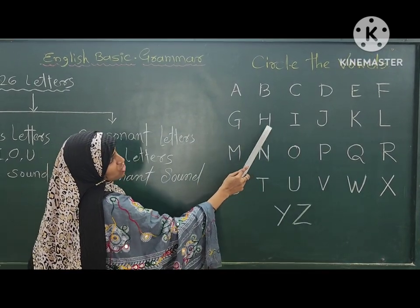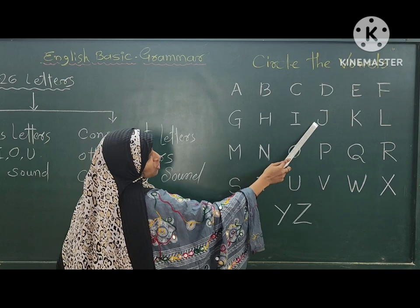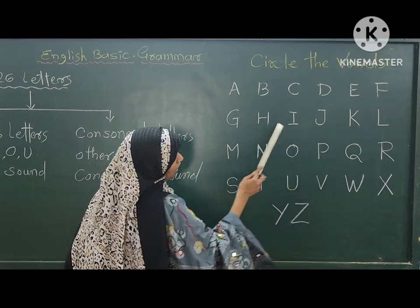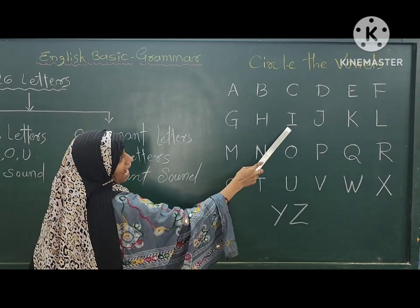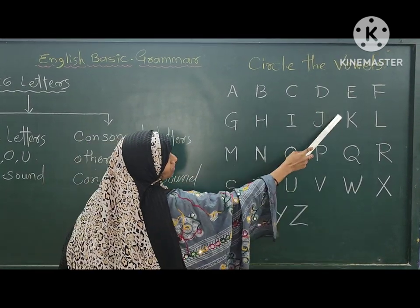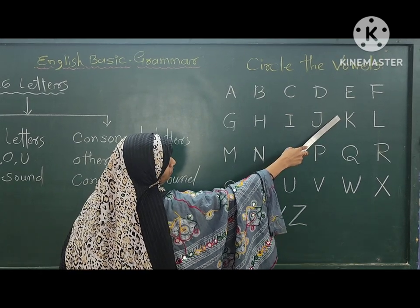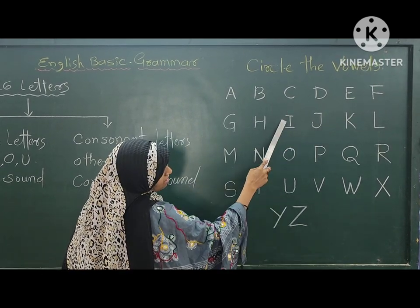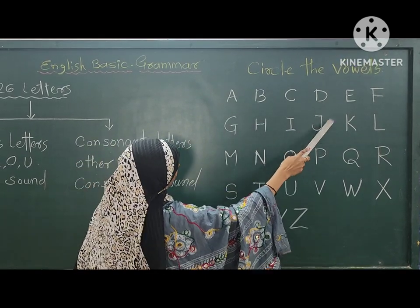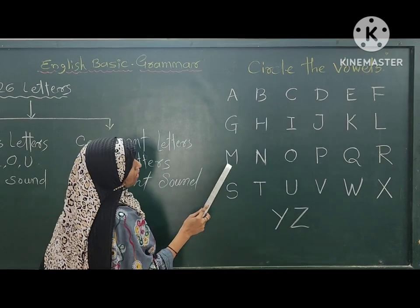G, H, I, J, K, N. Here, only I is a vowel — sorry — I is the vowel and the rest of the letters are consonants.